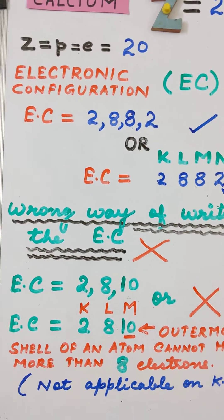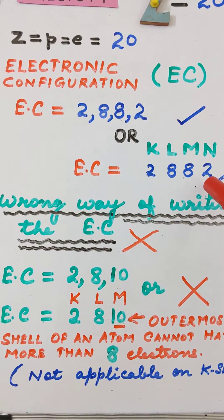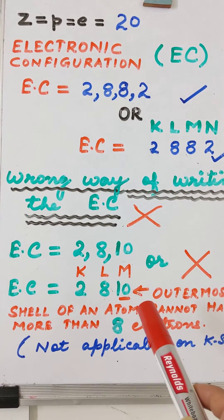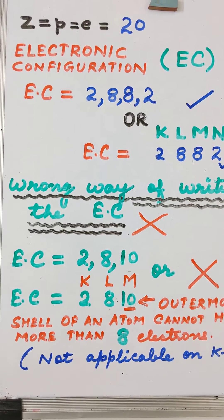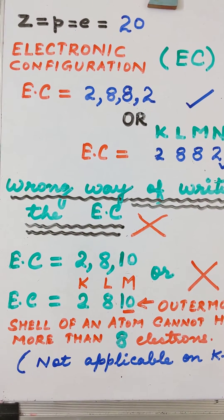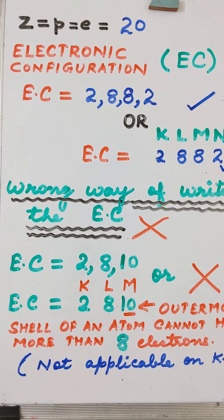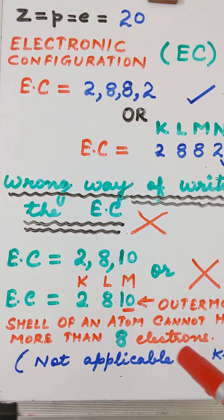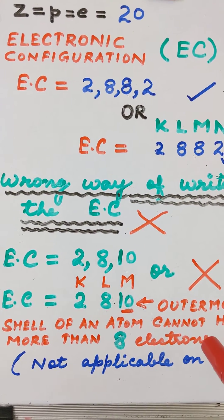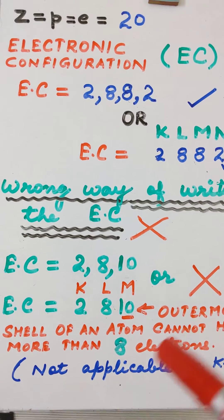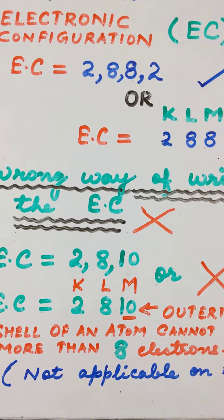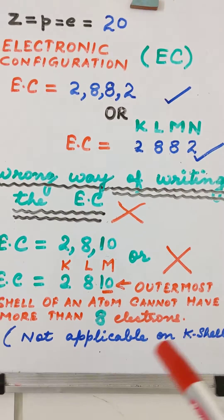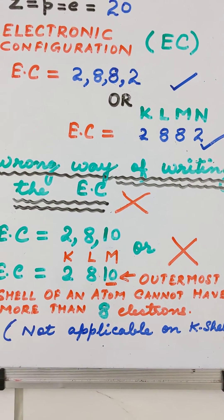Now before we understand the exact configuration, we know the three rules. According to the three rules, the maximum number of electrons in the K shell should be 2, in the L shell 8, and maximum electrons in the M shell can be 18. Electrons are filled in a stepwise manner, and the outermost shell of any atom cannot have more than 8 electrons in it.